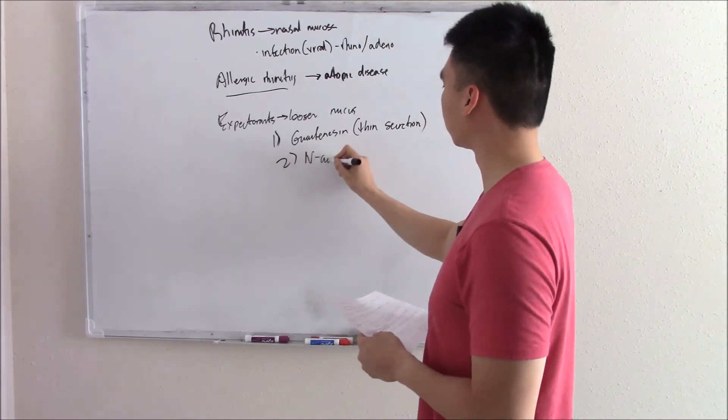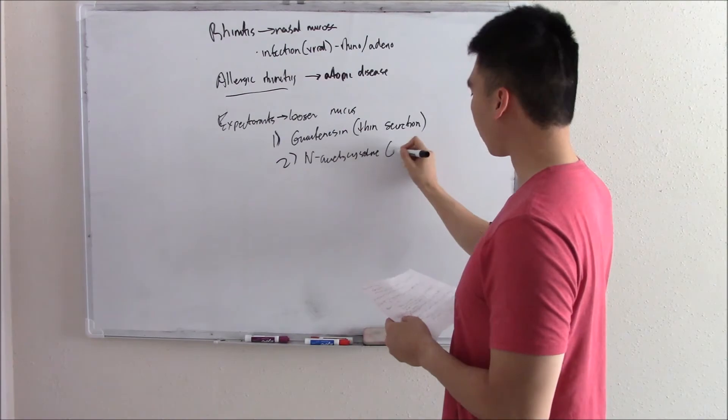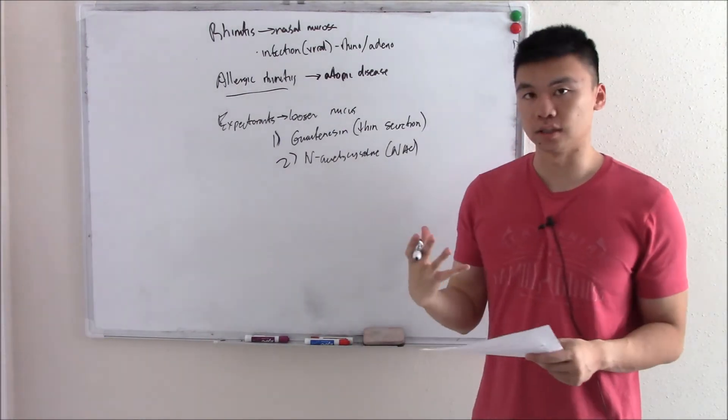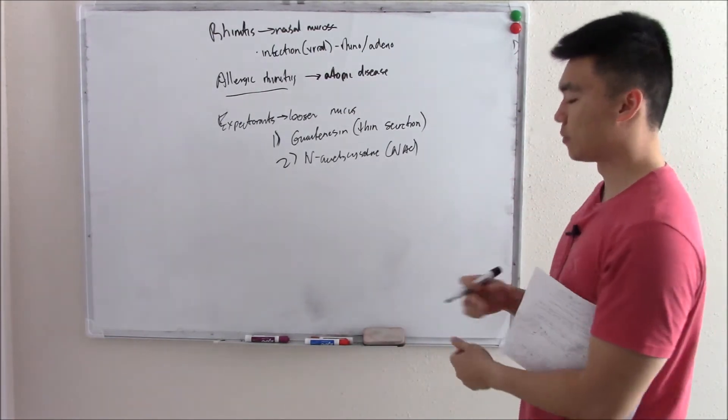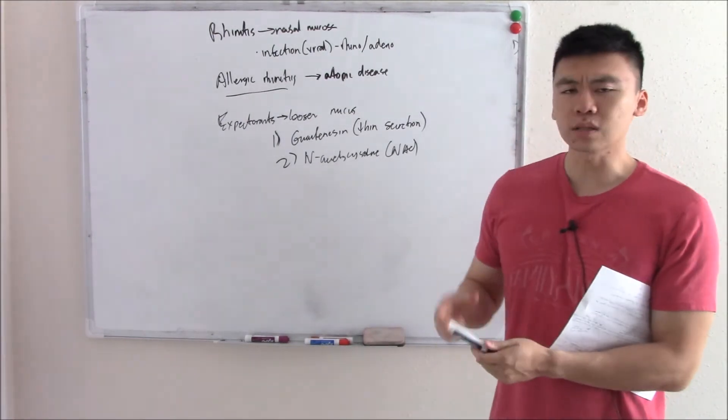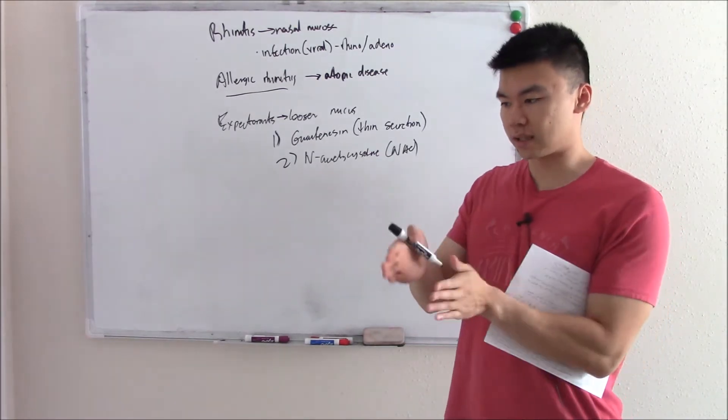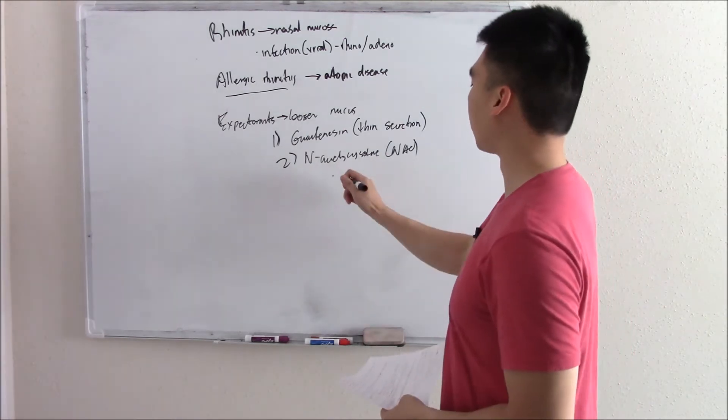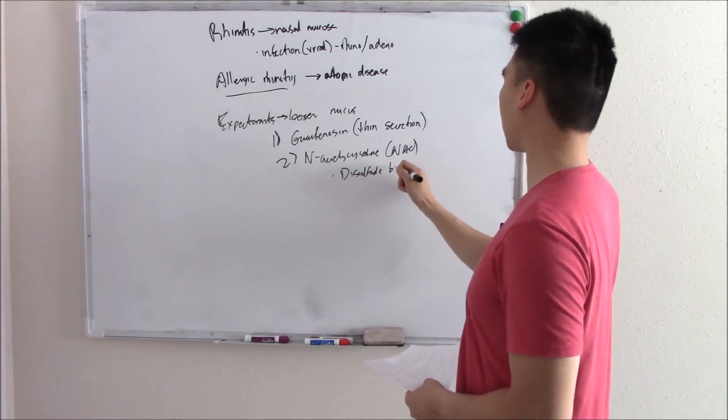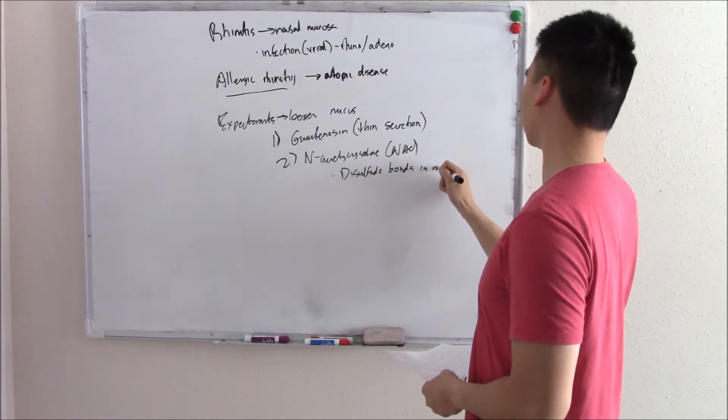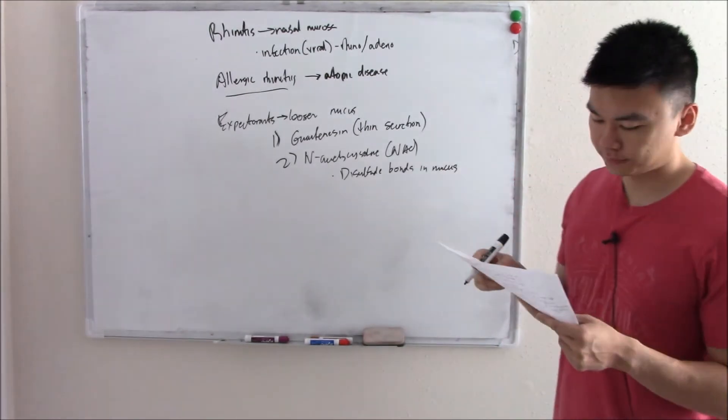Another one is N-acetylcysteine or NAC. And you're probably thinking, wait, NAC isn't that the thing you use to treat acetaminophen overdoses? And you're absolutely right. In the liver, it treats acetaminophen overdoses. In your respiratory tract, however, it thins your mucus. It kind of molecularly breaks down your mucus, makes it a little bit thinner. So it breaks down your disulfide bonds in your mucus. Disulfide bonds in mucus. And thins it out that way.